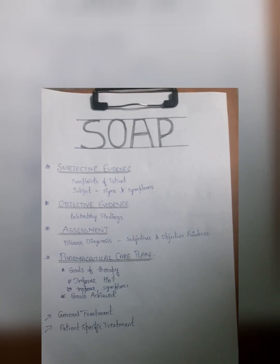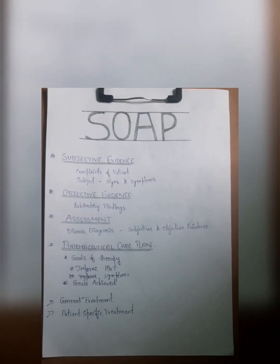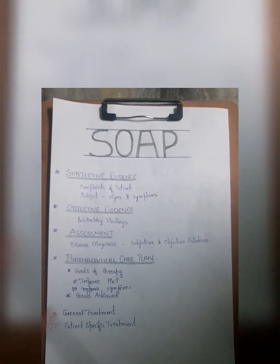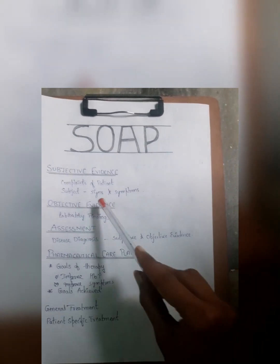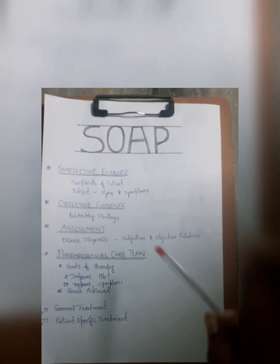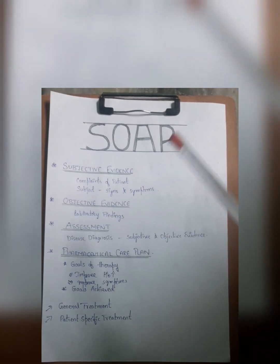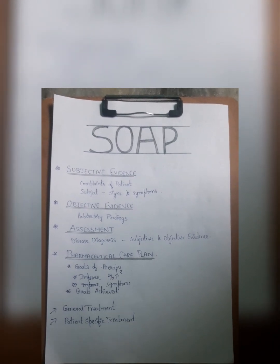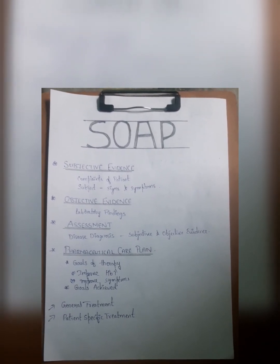Hello friends, in this video we will be discussing about how to analyze a case using the SOAP format. SOAP is one of the formats used to analyze a case. SOAP means S means subjective evidence, O means objective evidence, A means assessment, P means pharmaceutical care plan. Subjective evidence will include complaints of patients, like what the patient is experiencing — signs and symptoms. All information provided by the subject will be included in subjective evidence.